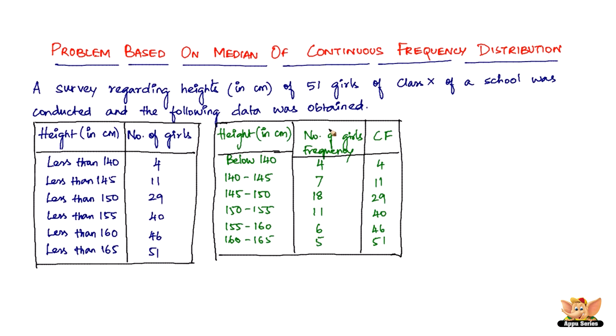So here is very clear, we've got n equals 51. Therefore we have n by 2 which is equal to 51 by 2 which is 25.5. So we need to find the cumulative frequency greater than 25.5, which is 29. The corresponding class interval to that is 145 to 150.